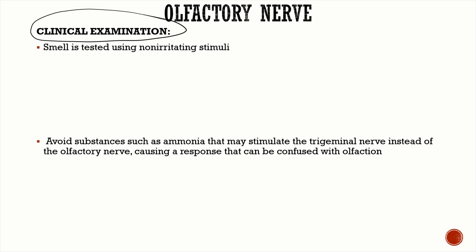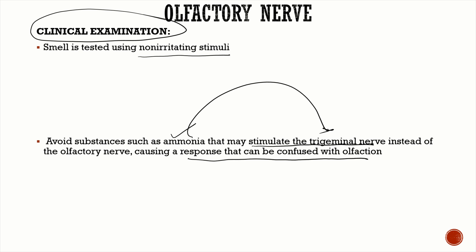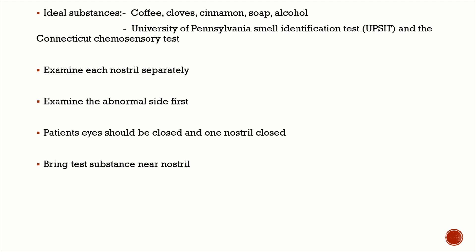The examination is very simple, but make sure you don't take an irritating substance — especially substances containing ammonia — because that will stimulate the trigeminal nerve and trigger a response that can be confused with olfaction. The best or ideal substance to take is coffee, as the patient can easily identify it. You can also use cloves, cinnamon, soap, or alcohol. Standardized tests include the University of Pennsylvania Smell Identification Test (UPSIT) and the Connecticut Chemosensory Test — just know the names of these.